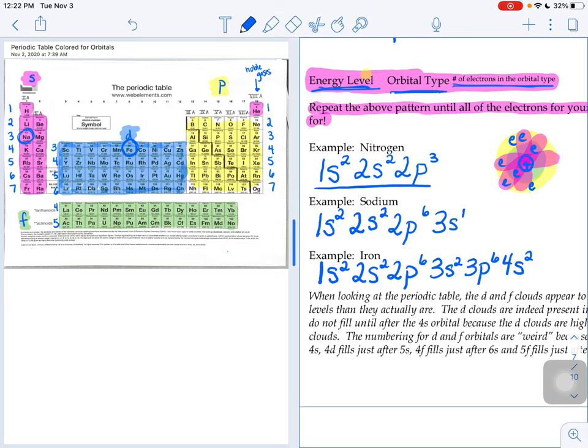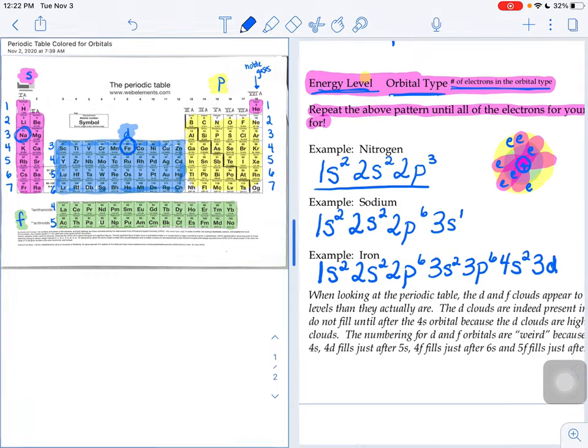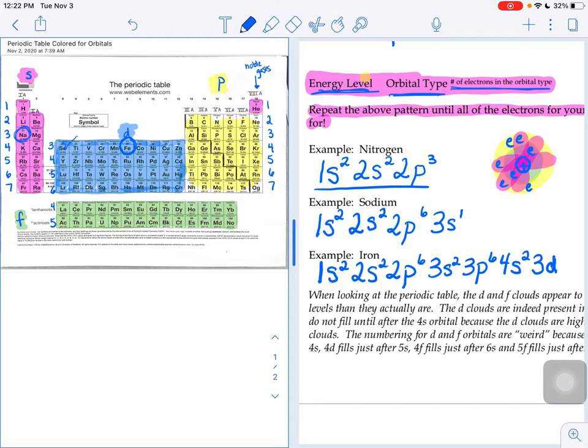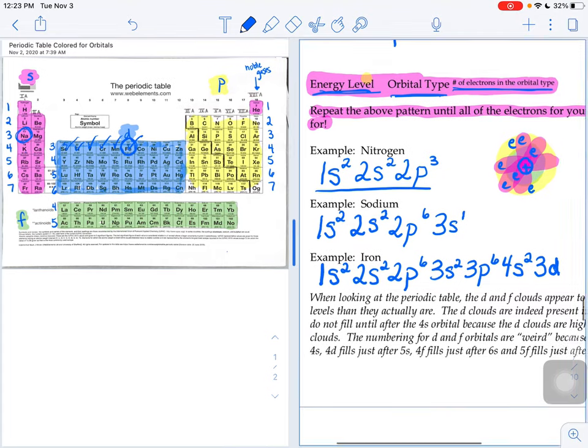And then to get to iron, to get to seat number 26, it's the D section. But there's a three there in front of the D, so it's 3d. And then to get to iron, I would need one, two, three, four, five, six seats to get to iron 3d6.